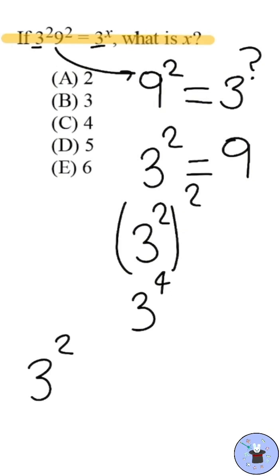We can then substitute 3 raised to 4 back into the original equation to get 3 squared times 3 raised to 4 equals 3 raised to x. We can then use another exponent property, called the product of powers property.